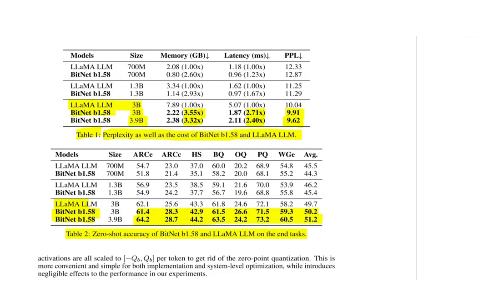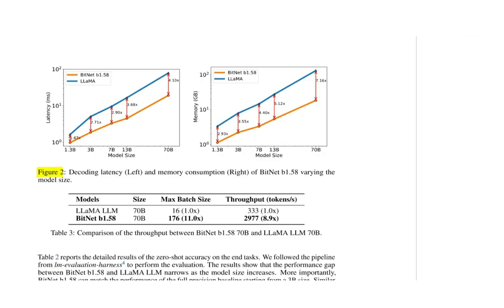In this figure here, figure 2, we can see the decoding latency and the memory consumption of BitNet b1.58 varying the model size in comparison to LLaMA. When we look at the model size compared to the latency for both BitNet and LLaMA, we can see that as you increase the model, so here we have 1.3 billion and here we have 70 billion, the difference between the two in terms of latency increases. The same holds true when we look at the memory consumption. Basically when you have a model with 1.3 billion parameters we have an increase of memory for LLaMA of 2.93, but when you go to 70 billion parameters we have an increase of parameters for LLaMA of 7.16.